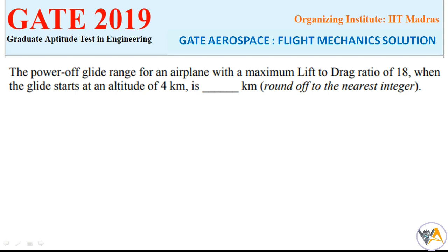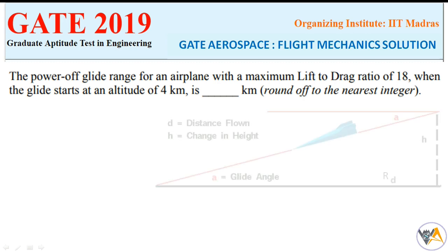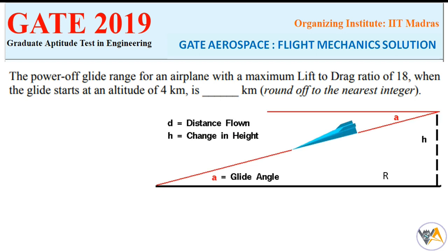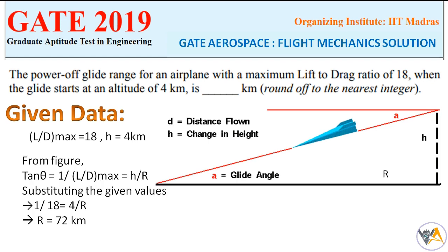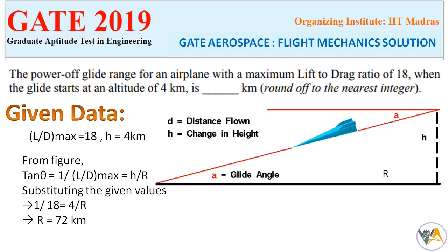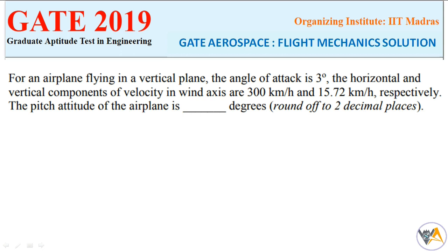In the given question, the maximum L/D ratio is 18 and the altitude is 4 kilometers. From this we have to find the range in kilometers. Substituting the given values into the glide range formula R = (L/D) × h, we get the range as 72 kilometers, which is within the acceptable zone.